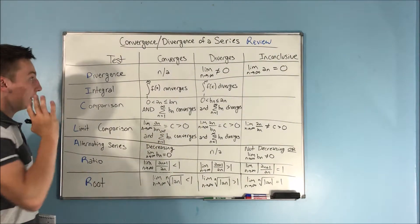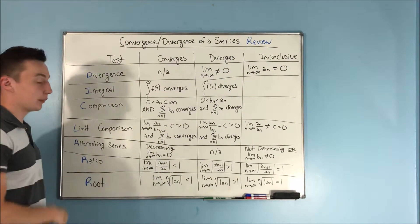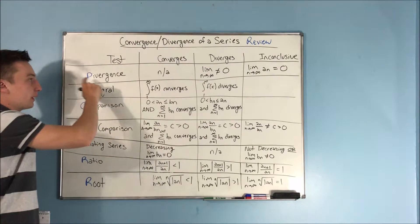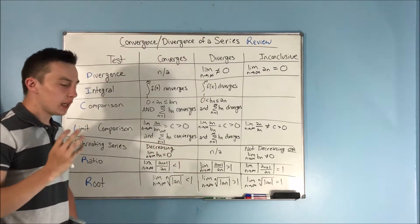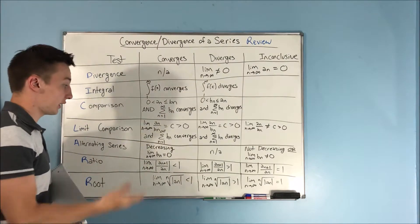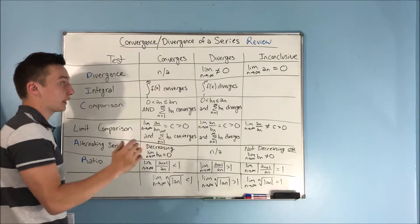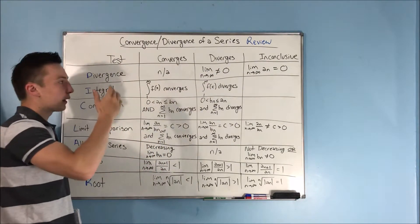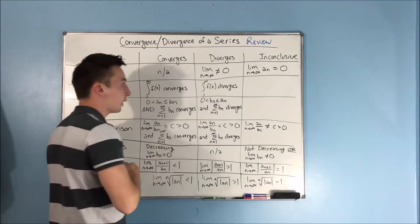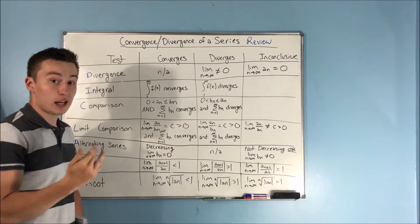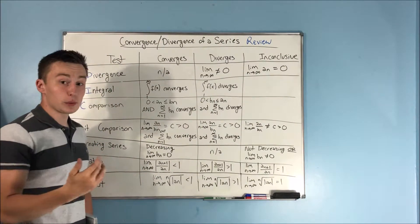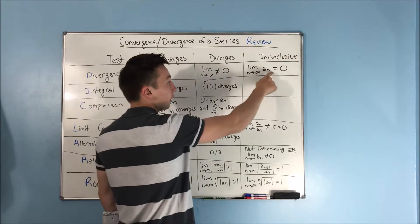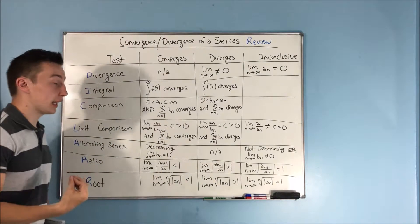All right, so that was a ton of writing. Here is all your tests. We start off with the test for divergence — that was a pretty simple test, one of the simplest tests we have. We're just testing to see if it diverges, as the name says. We test that by seeing if the limit as n approaches infinity does not equal zero. If it doesn't equal zero, it diverges. If it does equal zero, then it's inconclusive — we need to go to another test.